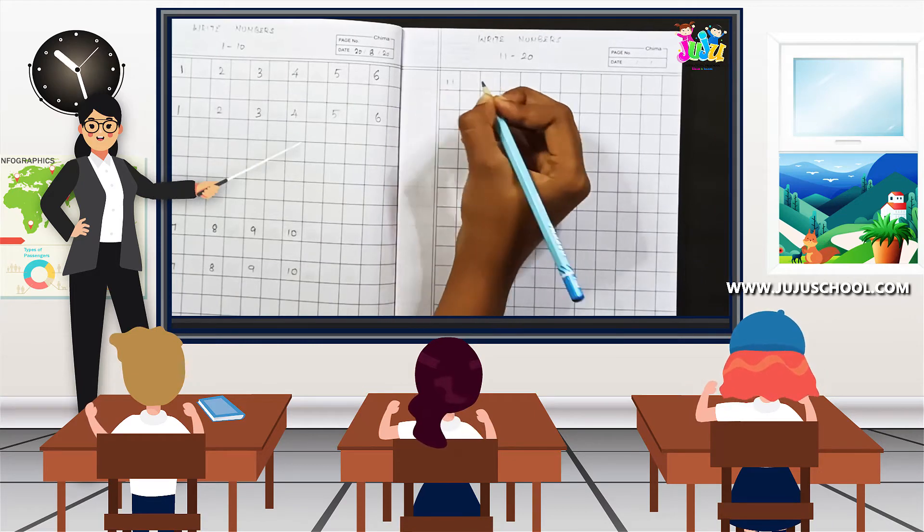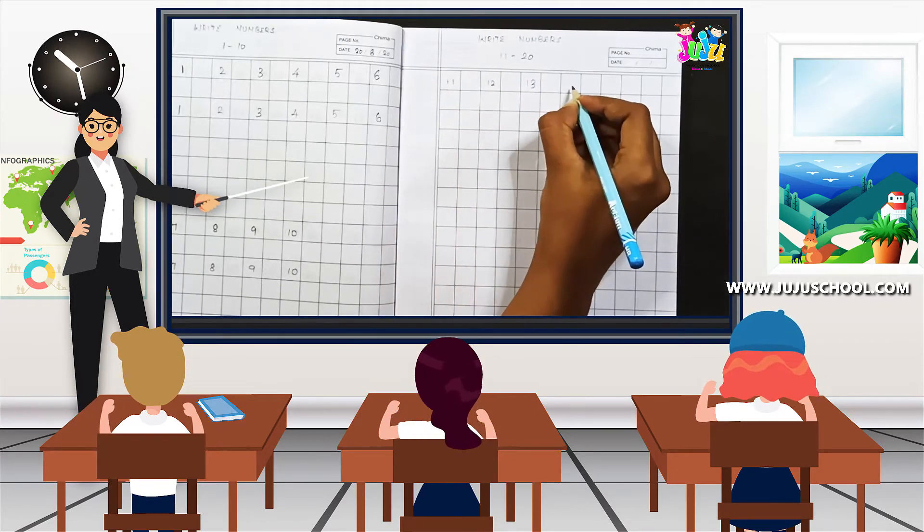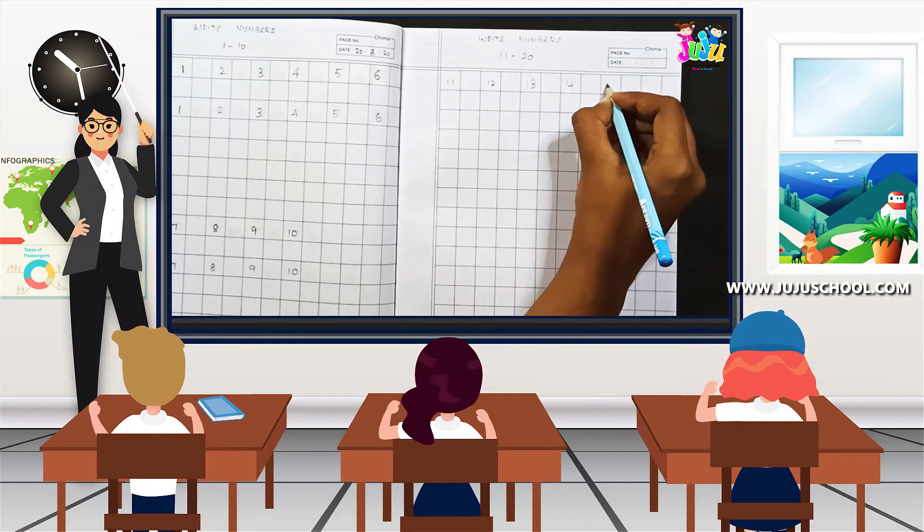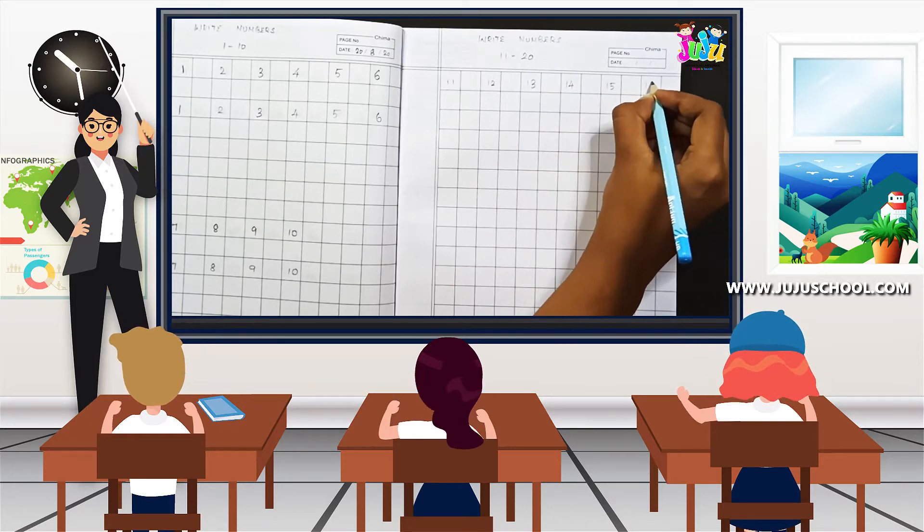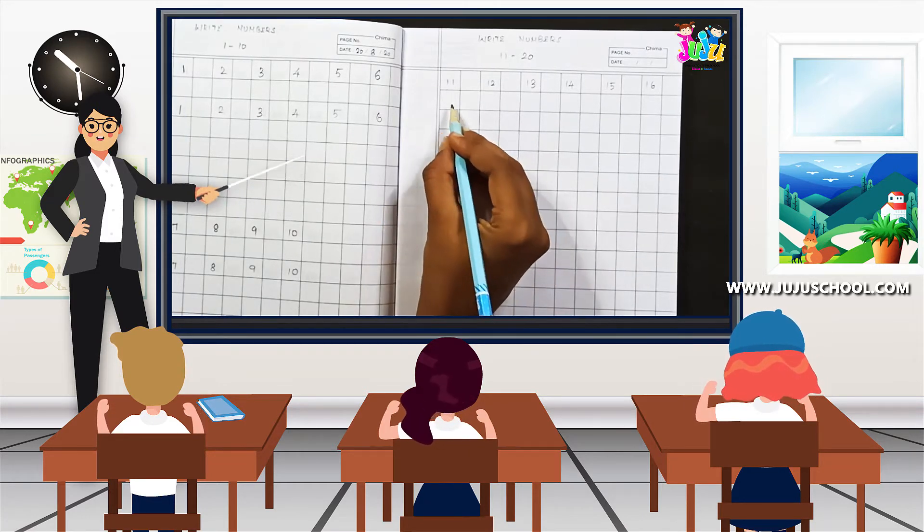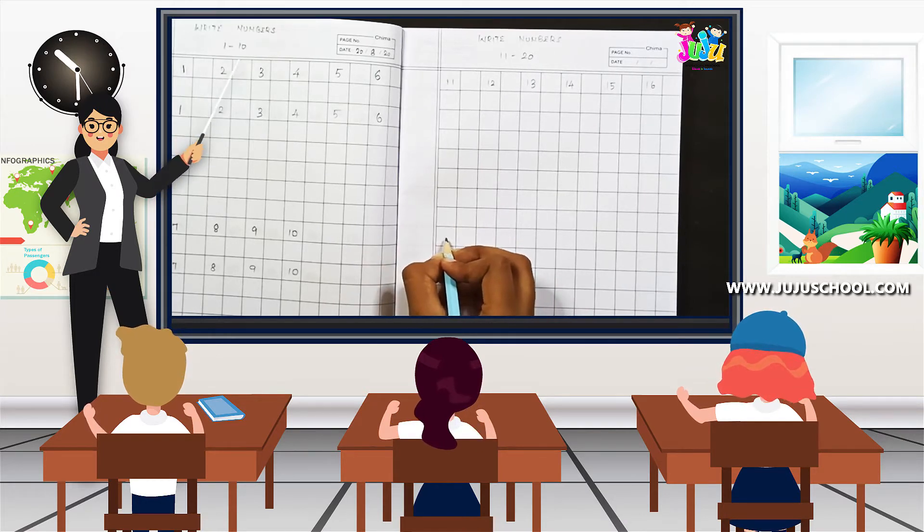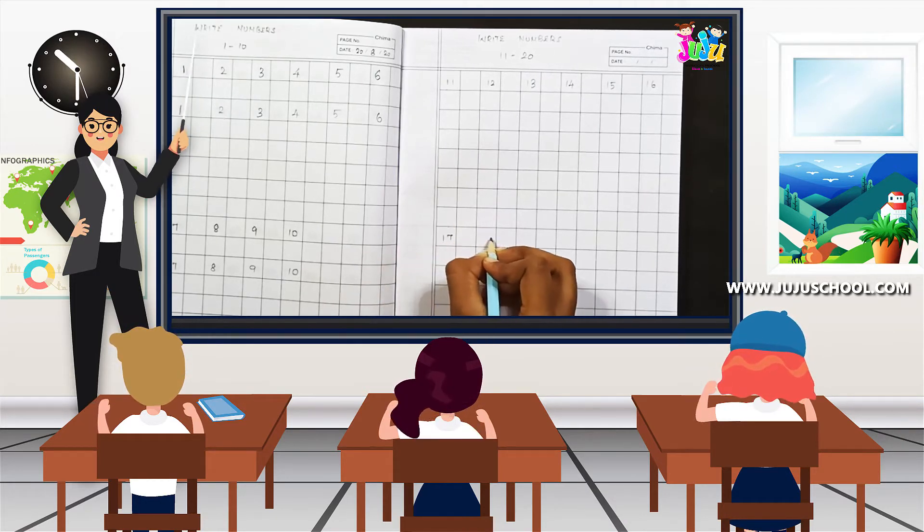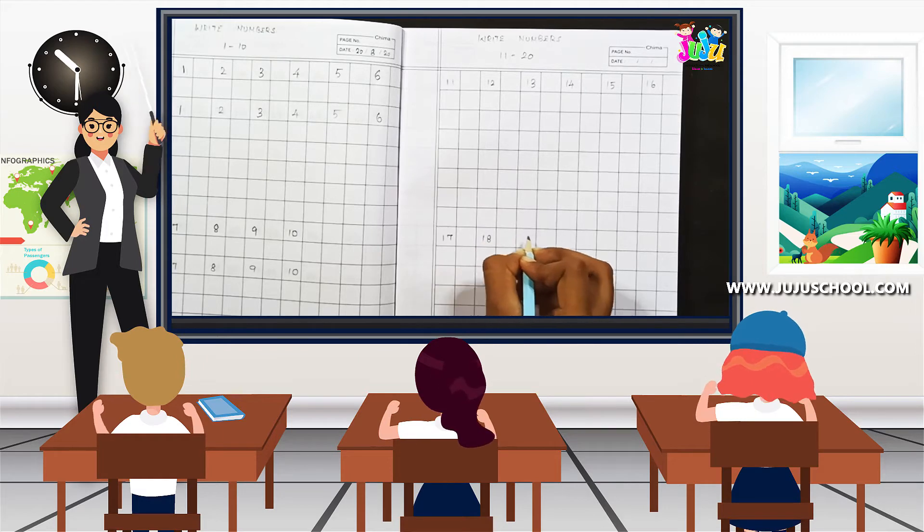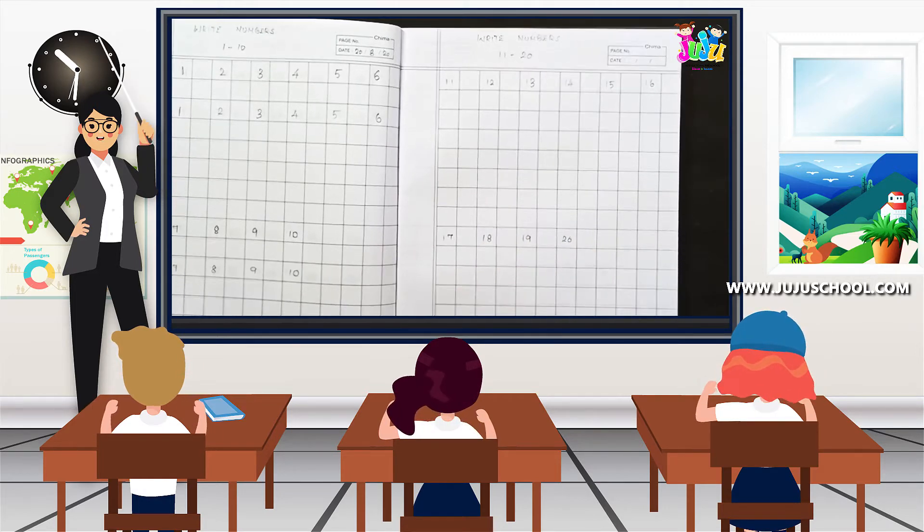So now here 11, 12, 13, 14, 15, 16 and from here leave 7 lines, leave 7 lines in between 1, 2, 3, 4, 5, 6, 7. So 7 lines we left and from the 8th line 17, 18, 19, 20. That's it.